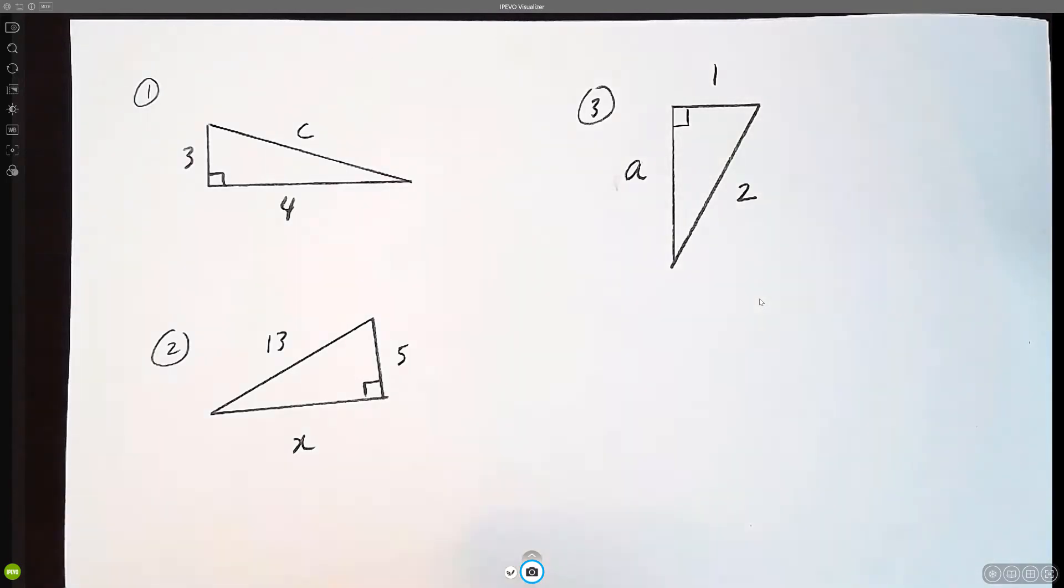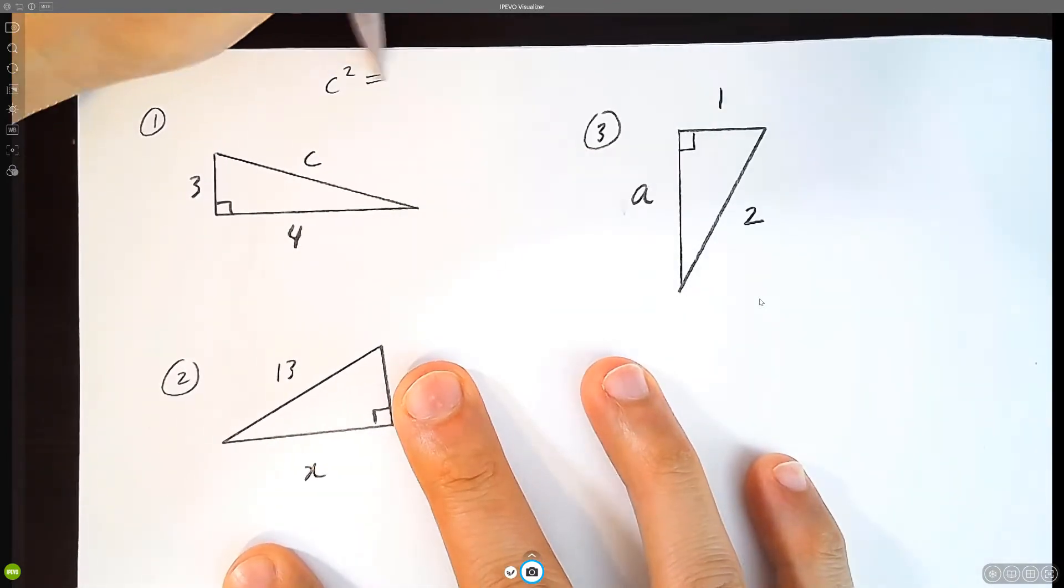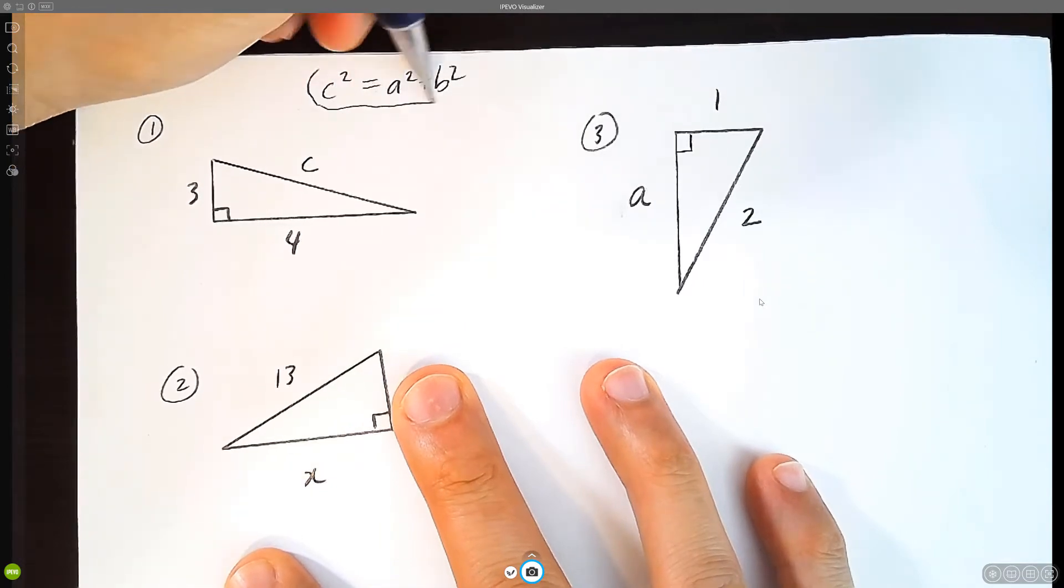Let's practice the Pythagorean Theorem. We learn in the Pythagorean Theorem that c squared equals a squared plus b squared. This is a nice formula to refer to.